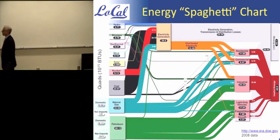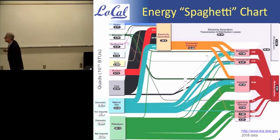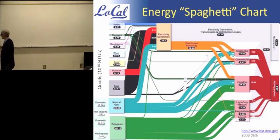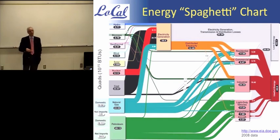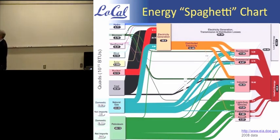This picture from the Department of Energy is known as the spaghetti chart. It's very complicated — on one side are all the different sources of energy and generation possibilities in the US economy, and on the other side all the different ways of characterizing consumption or loads. A lot of energy gets lost between sources and consumption. This is as of 2008; a 2010 version would not be very different, perhaps with a little more penetration of renewables.